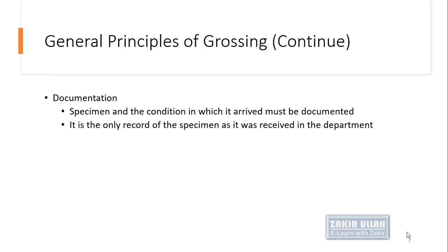Gross examination also helps in documentation of the specimen and the condition in which it arrived. For example, whether the sample was received in a container with a suitable amount of formalin or fixative, and whether there were certain other structures not mentioned in the request form. This is the only record for the specimen as it was received in the lab department.